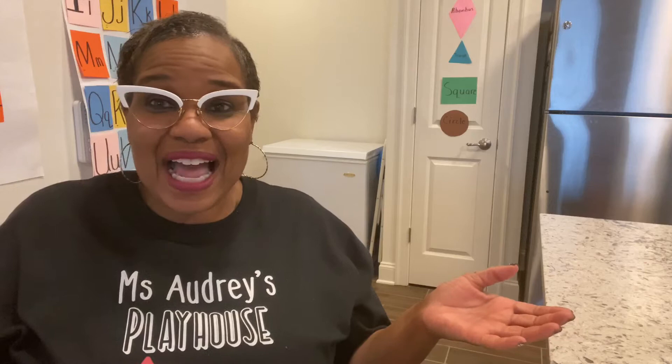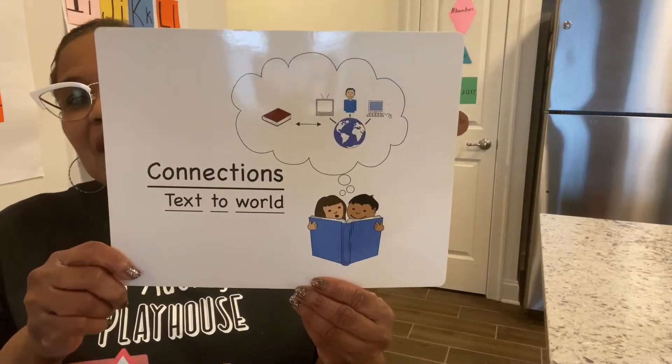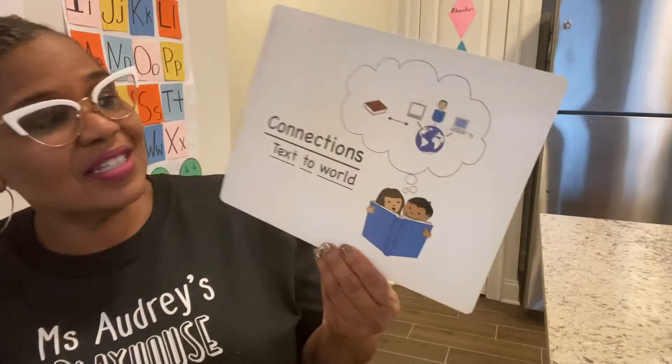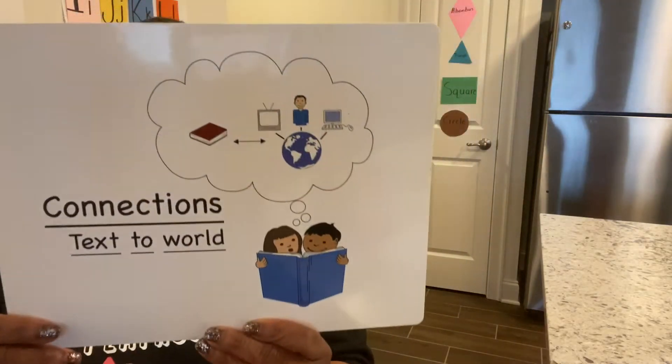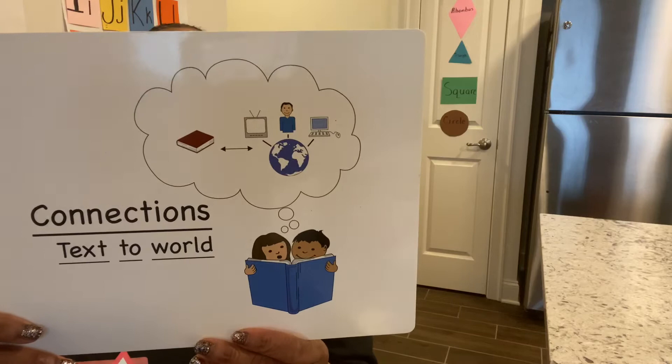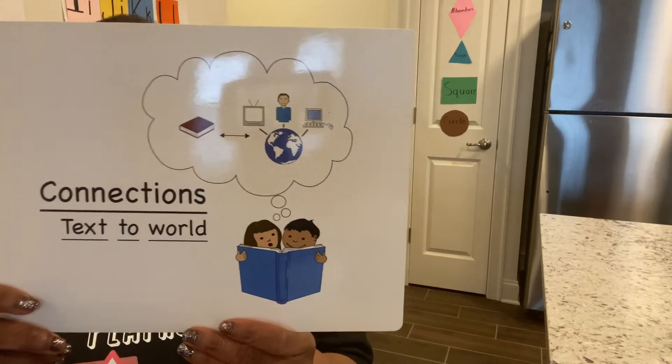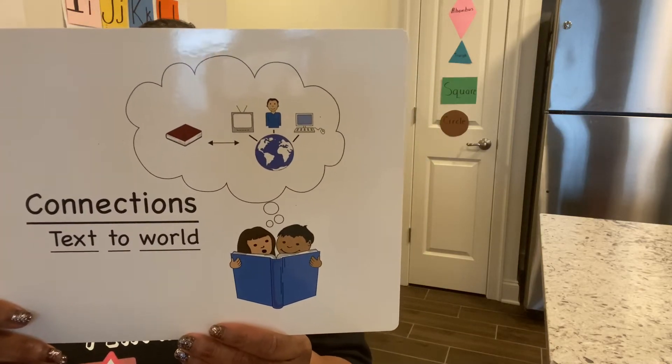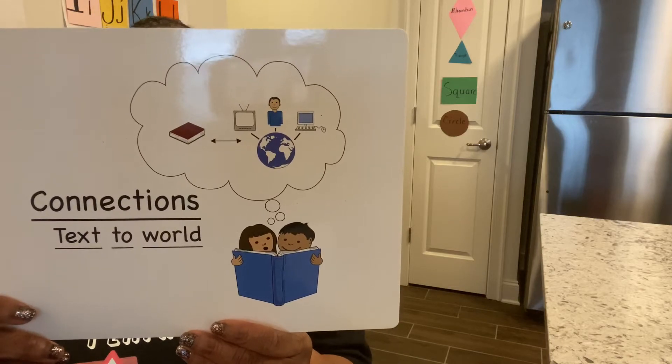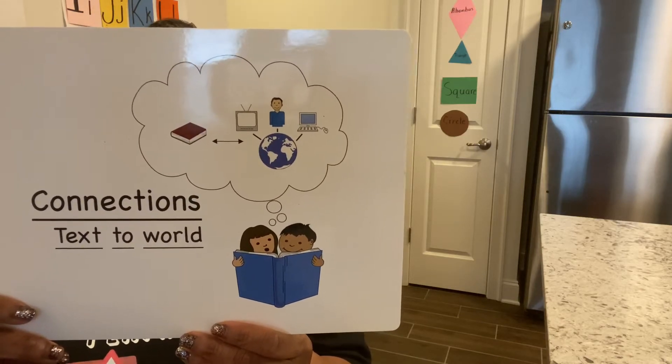Today is story time and we're going to read a story, so let's get started. But before we do, I have a card I want to show you. It says connections — text to world. Today when I read to you, you might make one of these connections between this book and something you saw on television, a movie, or something that someone told you, something you saw on the computer, or something that happened to you in your house. So you're going to make a connection.